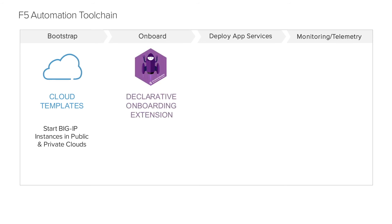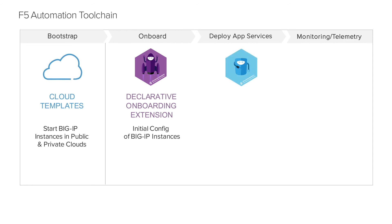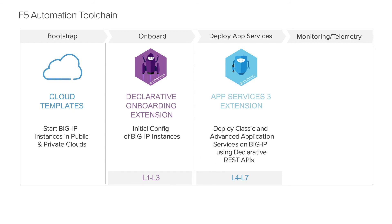F5's Declarative Onboarding extension uses a declarative model to initially configure BigIP devices to make it available on the network. The Application Services 3 extension, or AS3, automates the configuration of Layer 4 through Layer 7 application services, including local traffic management, global traffic management, security policy attachments, and more. Like Declarative Onboarding, AS3 leverages a declarative interface in a single API call.